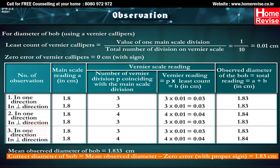Correct diameter of bob = mean observed diameter − zero error (with proper sign) = 1.83 cm.